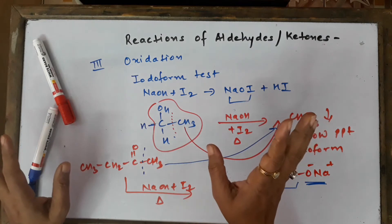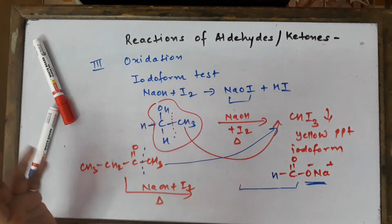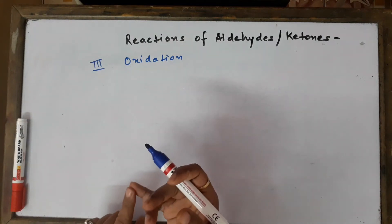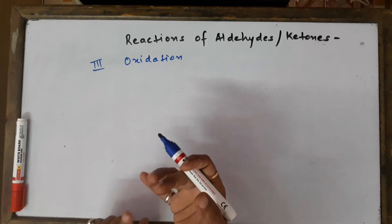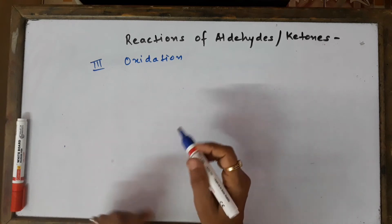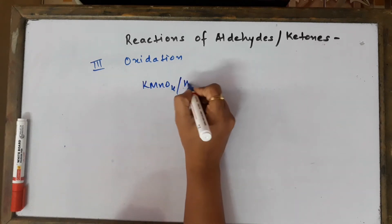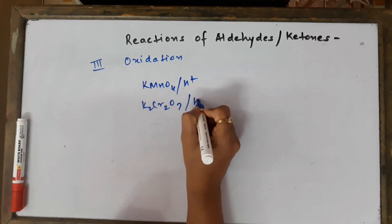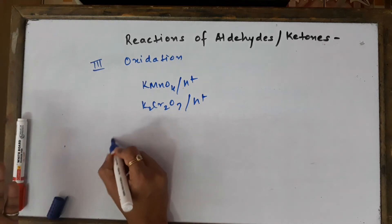The Iodoform test is a fantastic test to distinguish between different types of compounds. We have previously discussed Tollen's test, Fehling's test, and the Iodoform test. Now let's talk about oxidation using strong oxidizing agents like potassium permanganate in acid or potassium dichromate in acidic medium, and what happens when aldehydes and ketones are oxidized with these reagents.